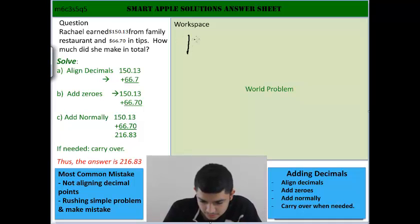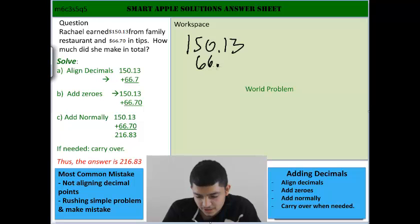So $150.13, and then $66.70, and then we're going to add the zero, so then we can add them like normal.